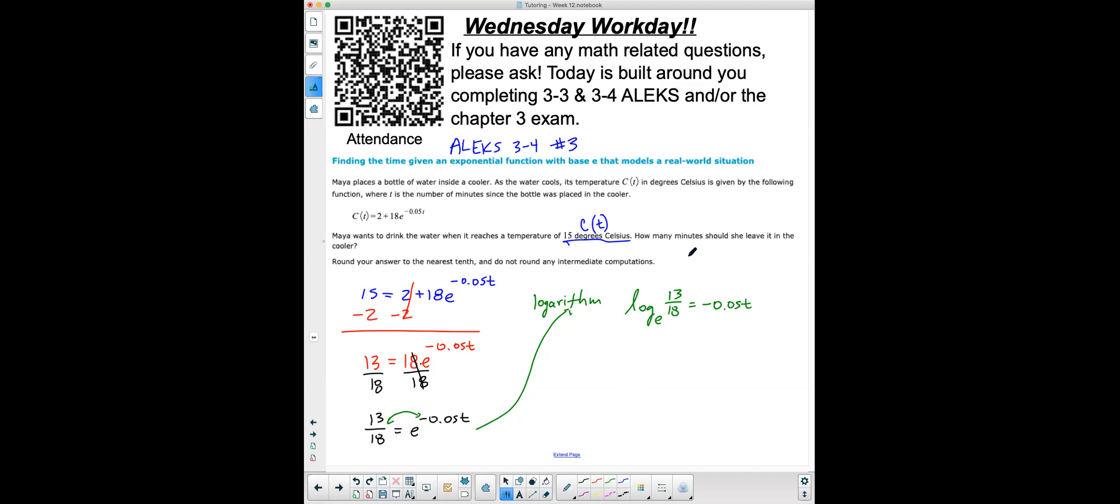Now, log with a base of E is the same thing as natural log. So we can type in the calculator as log base E, or we can just rewrite it as natural log. So I'm going to rewrite this as natural log. And I do my last step here. My last step is going to be to get T by itself is divide by negative 0.05, because those are multiplying. And so I'm going to divide all of this by negative 0.05.